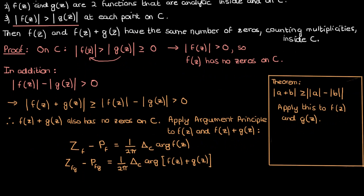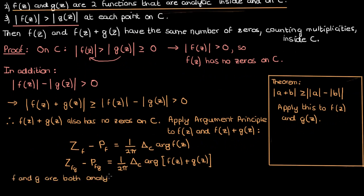Since f and g are both analytic inside C, they have no poles inside C. As a result, the P terms are zero and can be cancelled from both equations. f has no poles, g has no poles, so f plus g obviously will not have any poles either.